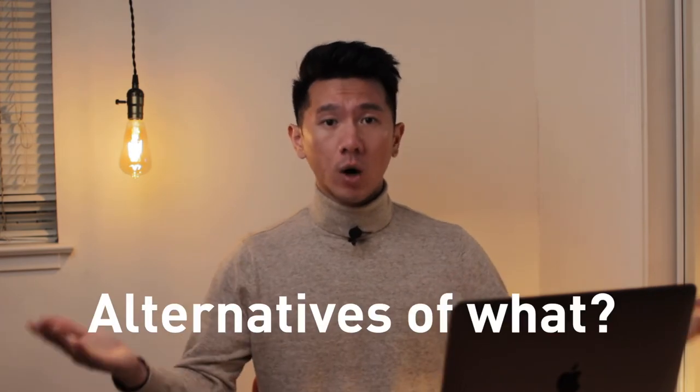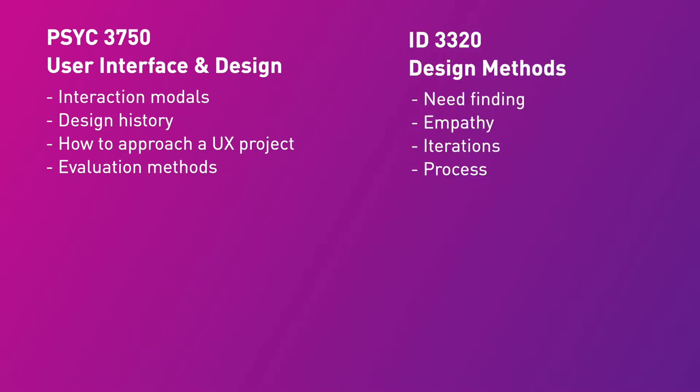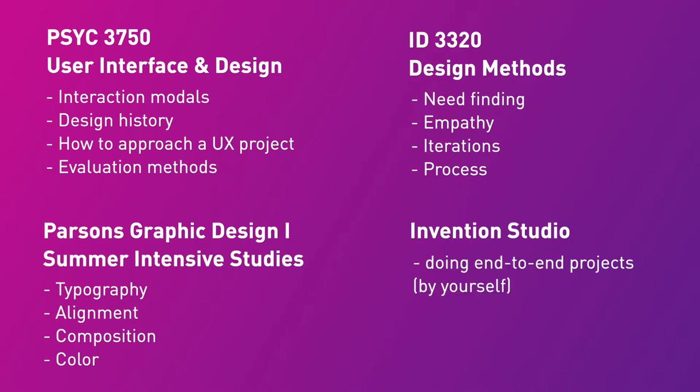To find the alternatives, we first need to understand the alternatives of what. So let's blast through those four courses really quickly: Psych 3750 User Interface and Design, ID 3220 Design Methods, Parsons Summer School, and Invention Studio. You will learn about need finding, research methods, process, empathy, and iterations in those classes. One thing to know is that you don't have to take those exact same courses as I did — as long as you learn what's in those classes, you will be fine.